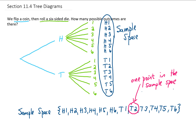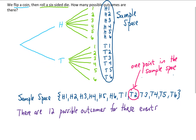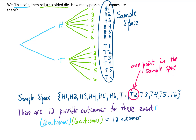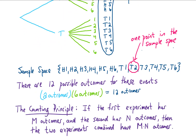To answer the actual question, if we count up all of the points in the sample space, we have 12 possibilities for these two events. You might be noticing that the first event had two possible outcomes and the second event had six possible outcomes. It is not a coincidence that 2 times 6 gave us 12, the total number of possible outcomes for these two events.